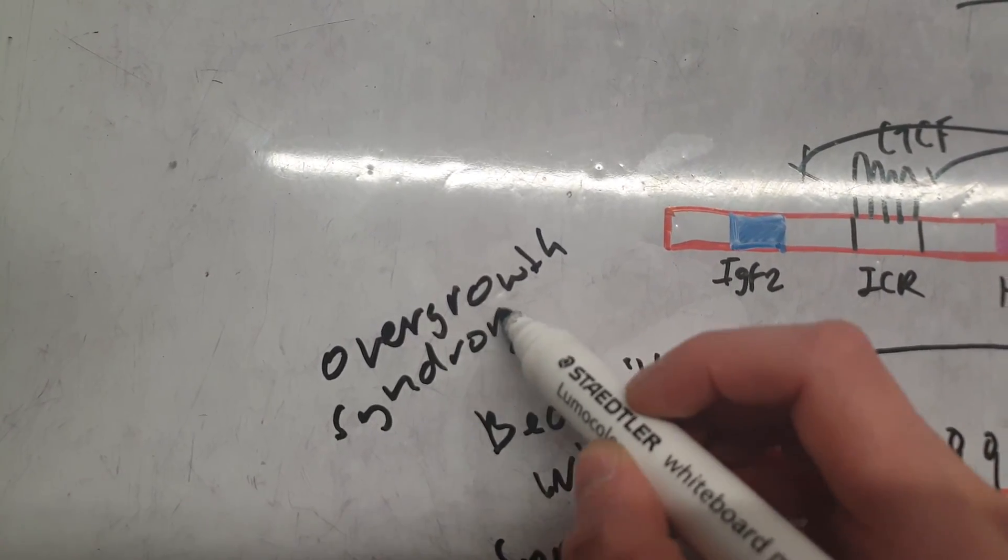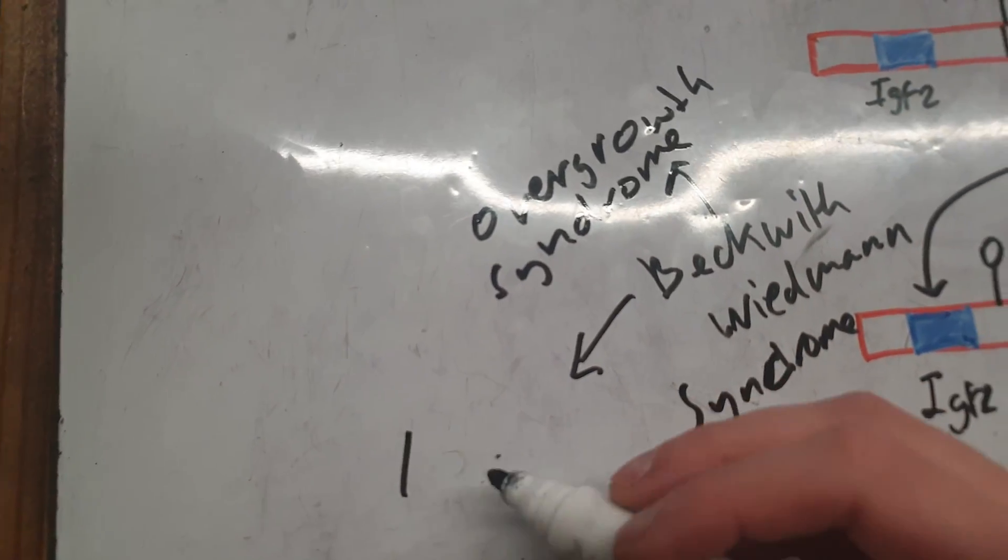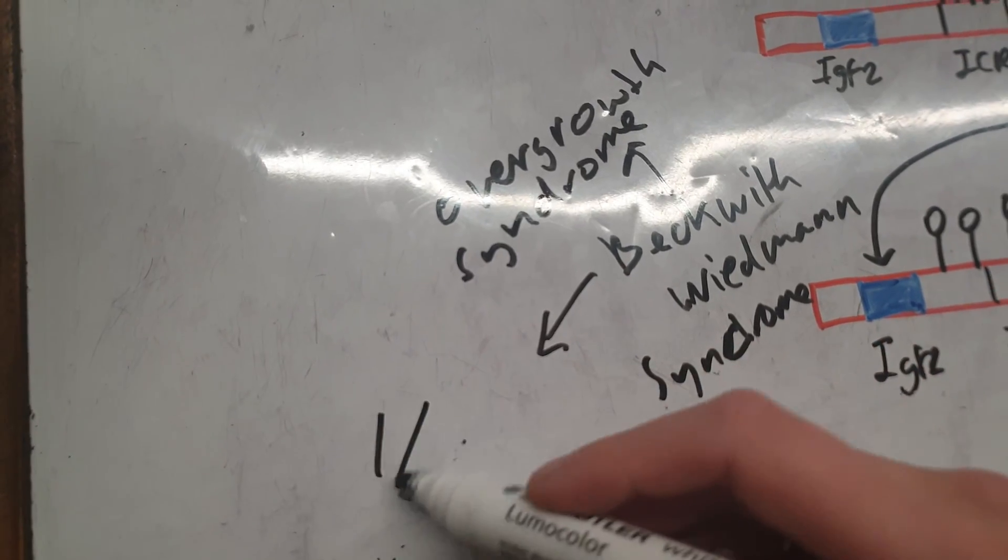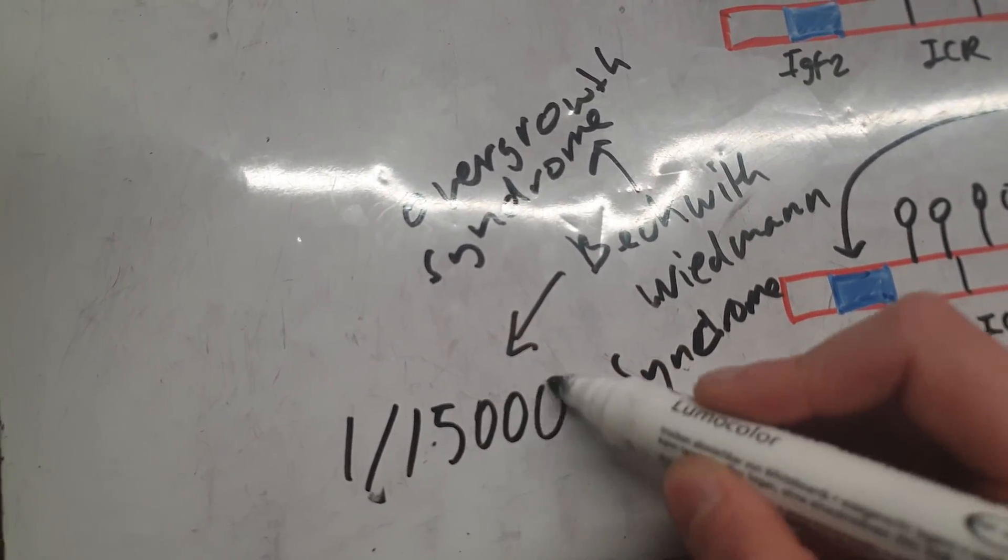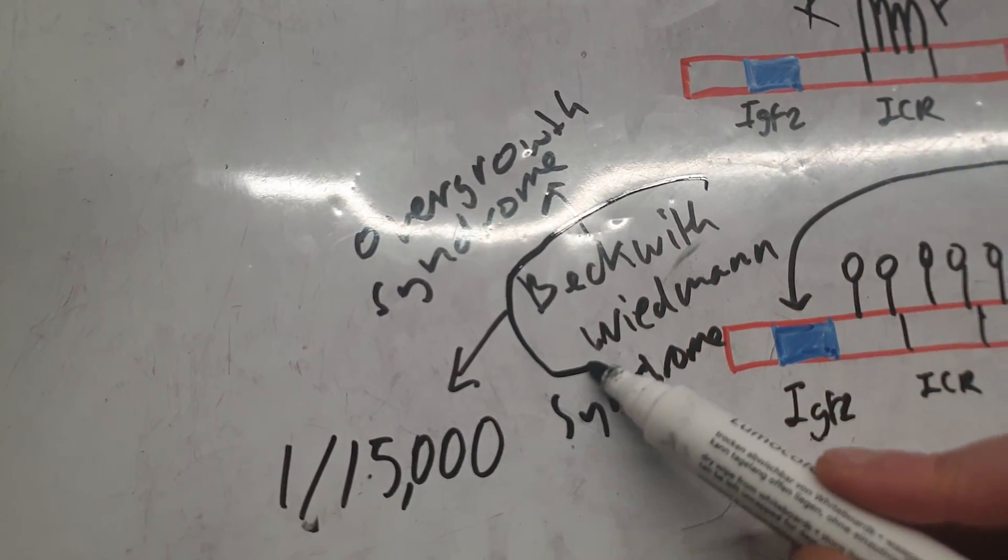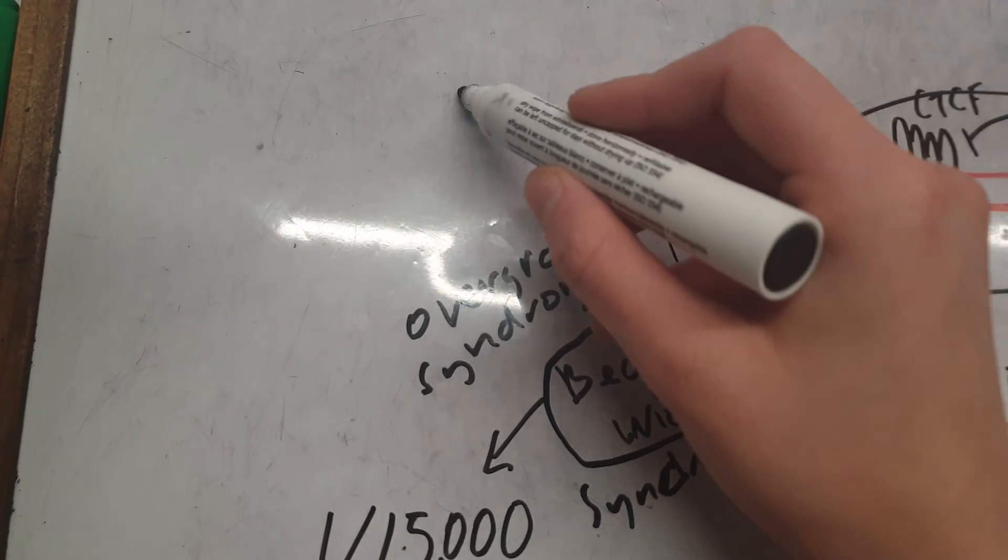It's relatively rare—it has an incidence of one in every 15,000 children. What these patients with Beckwith-Wiedemann syndrome express will be hypoglycemia.